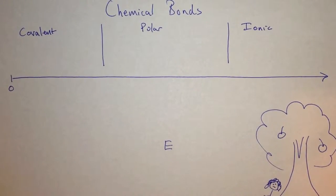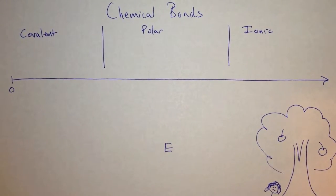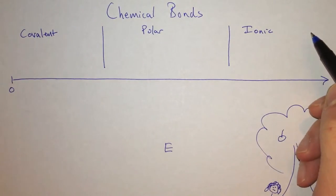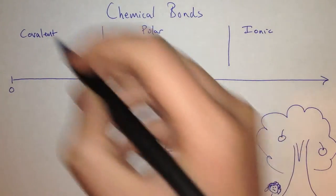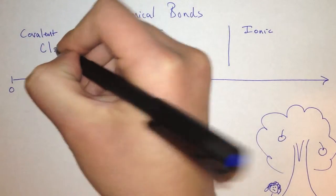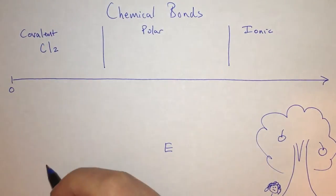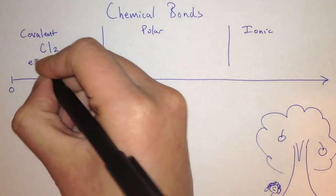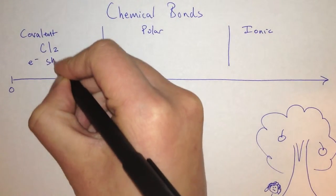There are three kinds: covalent, polar, and ionic. Each one is different. In a covalent bond, for example Cl2, the electrons are shared equally.